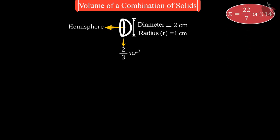On substituting the values of r and pi and solving, we get volume of hemisphere is equal to 44 upon 21 cubic centimeters.